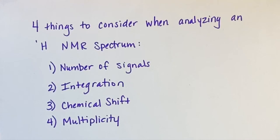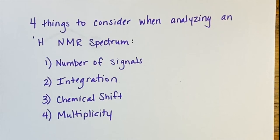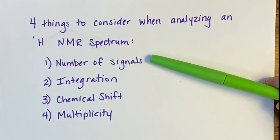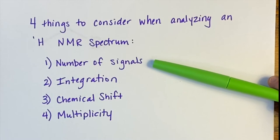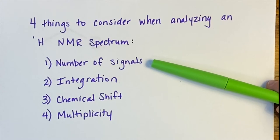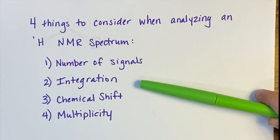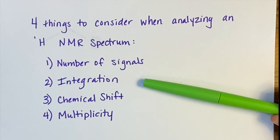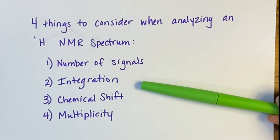In this video, we're going to look at the first two ways of analyzing an NMR spectrum: understanding the number of signals, meaning the number of unique types of protons, and understanding the integrations for our peaks, meaning the number of protons represented by each signal.